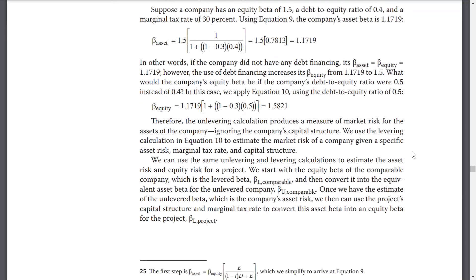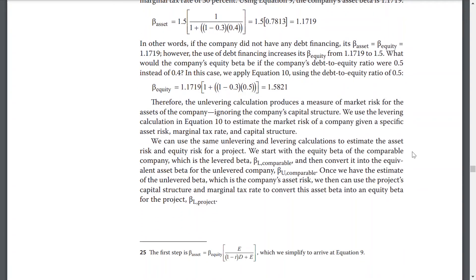Therefore, the unlevering calculation produces a measure of market risk for the asset of a company, ignoring the company's capital structure. We use the levering calculation in equation 10 to estimate the market risk of a company given a specific asset risk, marginal tax rate, and capital structure. We can use the same unlevering and levering calculations to estimate the asset risk and equity risk for a project. We start with the equity beta of a comparable company — the levered beta — and convert it into the equivalent asset beta for the unlevered company. Once we have the estimate of the unlevered beta, representing the company's asset risk, we can use the project's capital structure and marginal tax rate to convert this asset beta into the equity beta for the project.